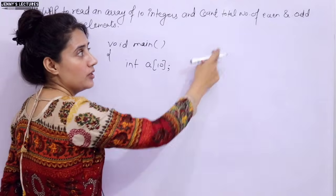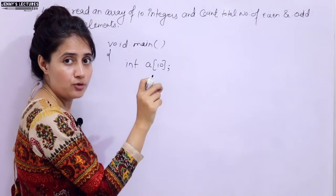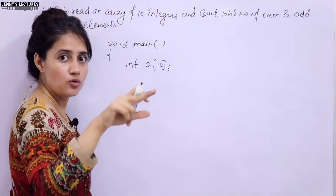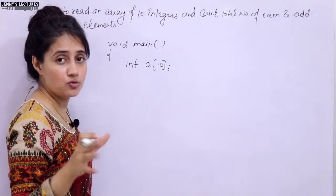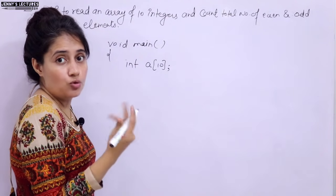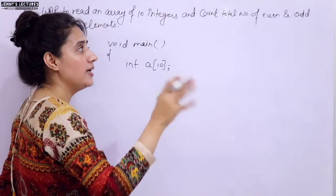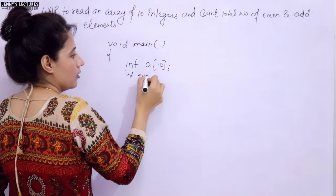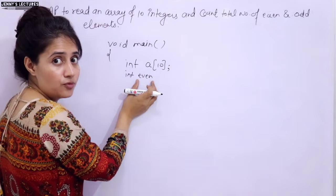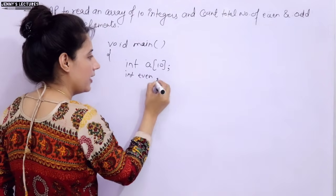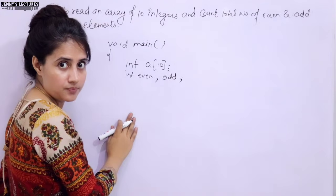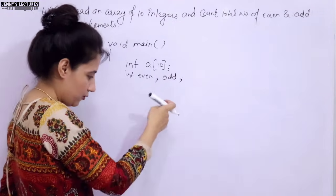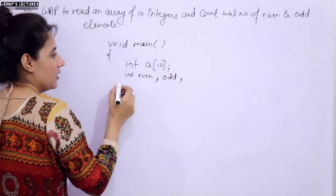Now we have to count the total number of even and odd elements. Suppose we entered 5 even and 5 odd — we need to print that. For that, we need two variables: 'even' to store the count of even numbers, and 'odd' to store the count of odd numbers. We've initialized both variables with 0.